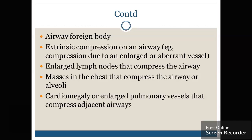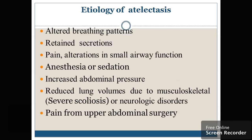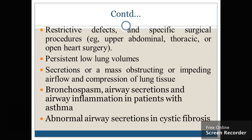Cardiomegaly or enlarged pulmonary vessels that compress adjacent airways. What will be the etiological factors for atelectasis? There will be an altered breathing pattern, pain, alteration in small airway function, anesthesia, or because of anesthesia or sedation. Increased abdominal pressure, or if the patient is having a reduced lung volume due to musculoskeletal disorders such as severe scoliosis, or pain from upper abdominal surgeries. Any kind of bronchospasm, abnormal airway secretion, cystic fibrosis, or the patient with persistent low lung volumes.